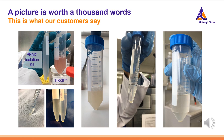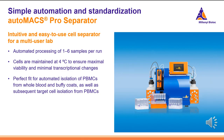Since we've talked about the Automax so much, it only makes sense to give you an overview of the instrument. The Automax Pro separator is an intuitive and easy-to-use cell separator for a multi-user lab. It allows the automated processing of one to six samples per run. The cells are maintained at four degrees to ensure maximal viability and minimal transcriptional changes. It's not only a perfect fit for automated isolation of PBMCs from whole blood and buffy coats, but also great for target cell isolation from PBMCs, whole blood, and dissociated tissues.